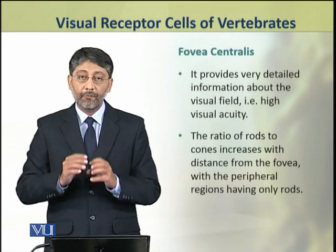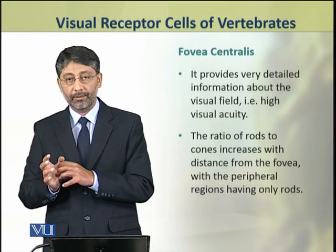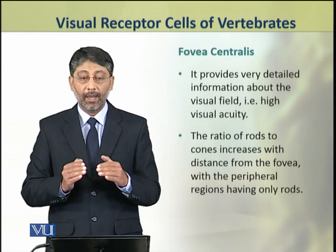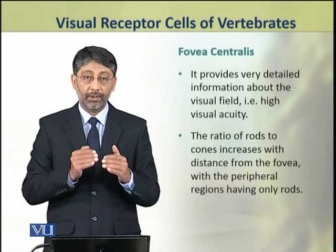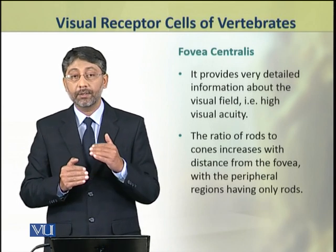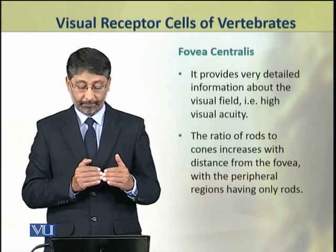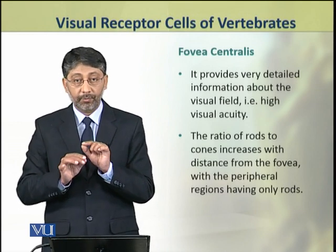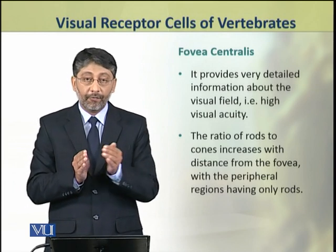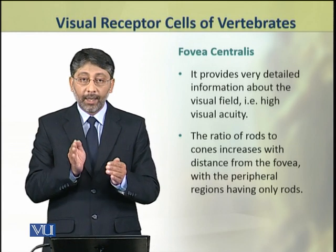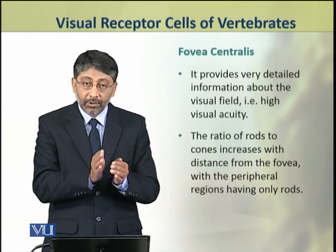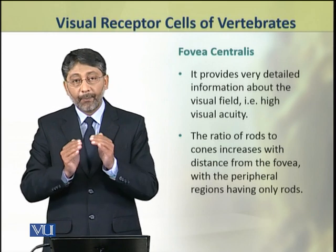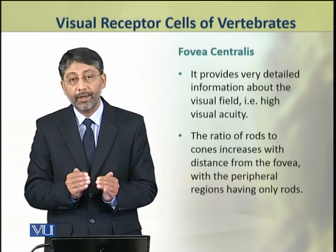The fovea centralis provides highly detailed visual information, known as high visual acuity — a speciality of humans and some other mammals. In the fovea centralis there are only cones and no rods, whereas the peripheral regions of the retina have only rods but no cones.